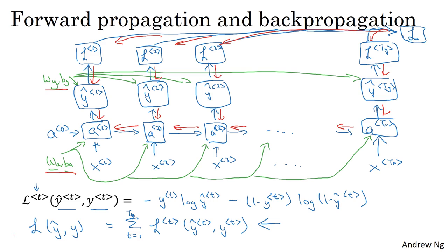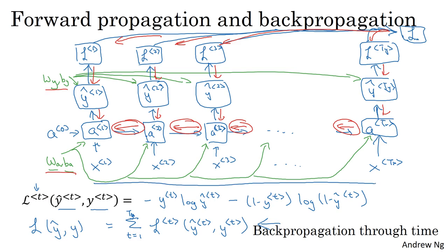Now, in this backpropagation procedure, the most significant messages to be passed, the most significant recursive calculation is this one which goes from the right to the left. And that's what gives this algorithm a pretty fanciful name called backpropagation through time. And the motivation for this name is that for forward prop, you're scanning from left to right and increasing indices of the time t, whereas for backpropagation, you're going from right to left, you're kind of going backwards in time. So this gives this really cool name, backpropagation through time, where you're going backwards in time. That phrase really makes it sound like you need a time machine to implement this algorithm, but I just thought that backprop through time was just one of the coolest names for an algorithm.